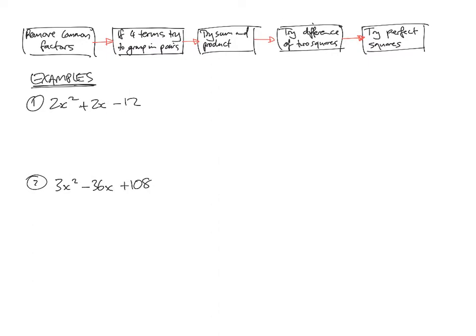Alright, so let's apply that flowchart to these questions. I don't know what kind of factorization I need to use, so we need to decide ourselves, and the best way to do that is to apply this flowchart. So step one, remove common factors. Are there common factors in all of these terms?